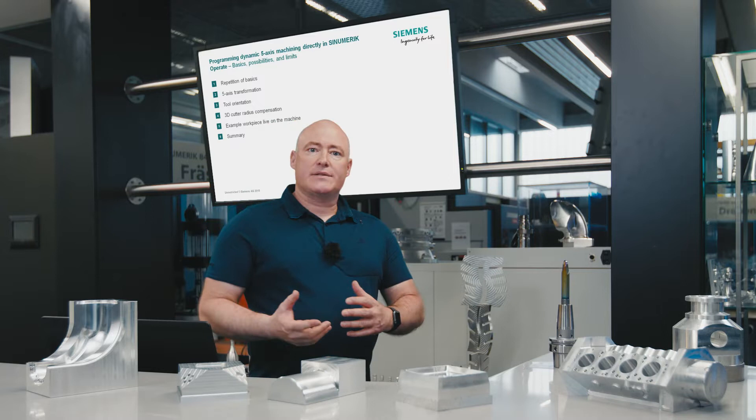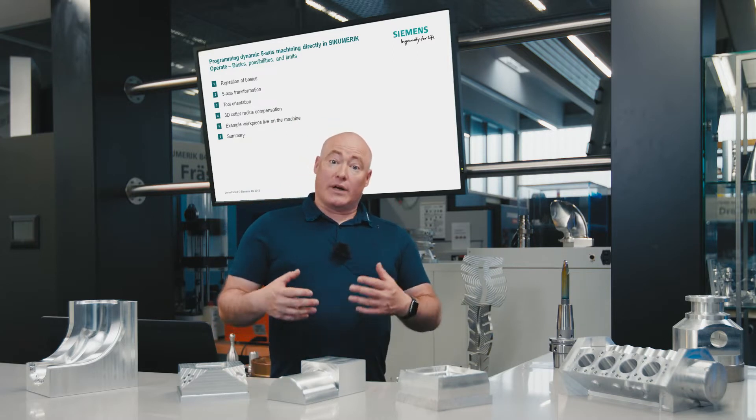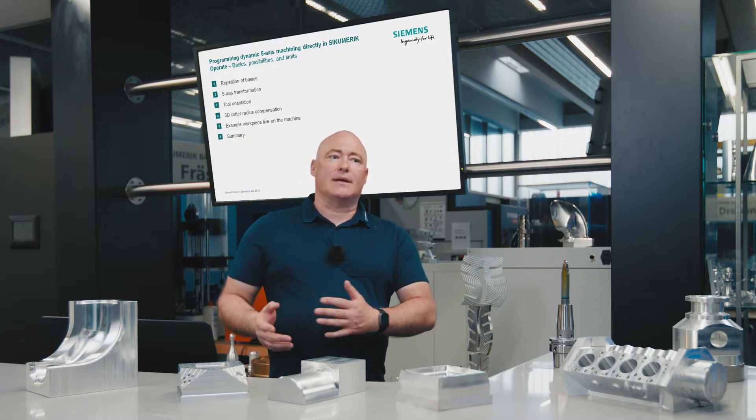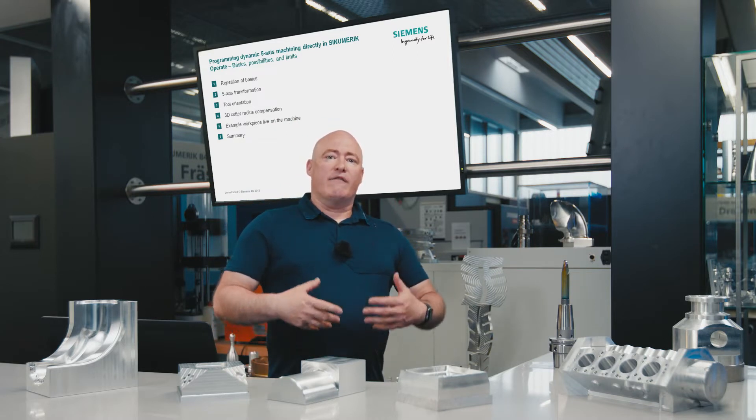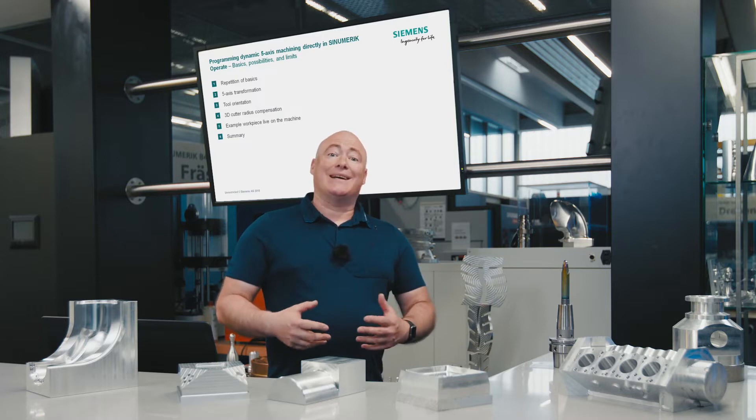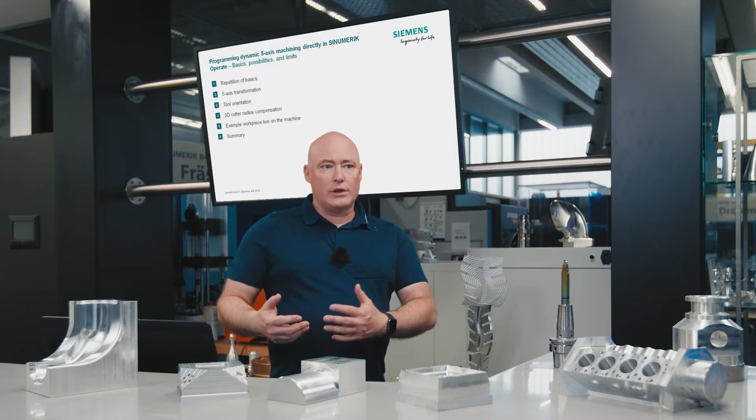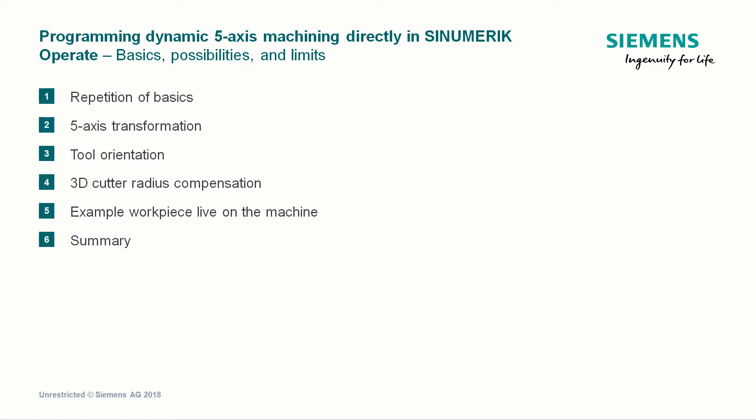We'll start by going over the basics of multi-axis, multi-phase milling machining. This will be followed by an explanation of five-axis transformation. The tool orientation and the 3D radius compensation are repeated and, of course, an example workpiece is milled live on the machine, which will be the central part of today's presentation. As always, the presentation is rounded off with a summary of what we've learned today.